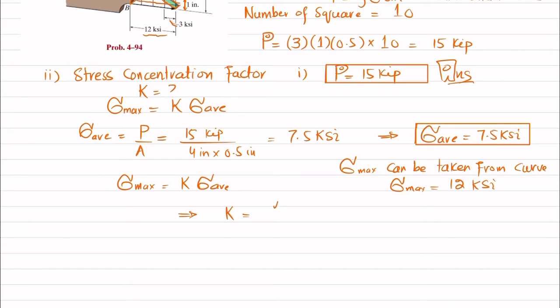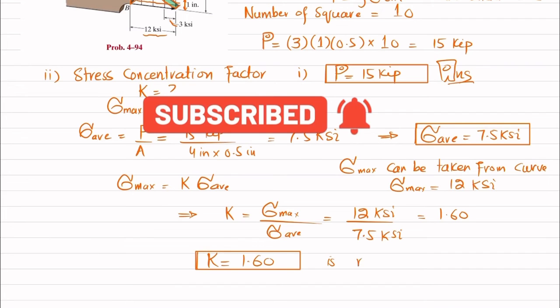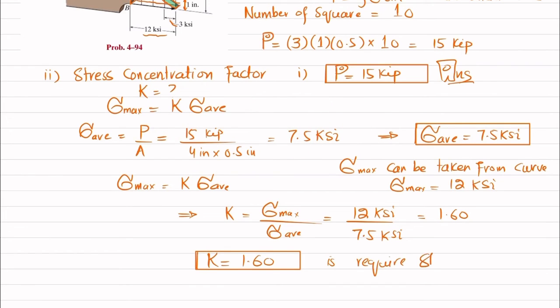So from here, this K will be equal to sigma max divided by sigma average. So put the value sigma max is 12 ksi and sigma average is 7.5 ksi, which will give you 1.60.